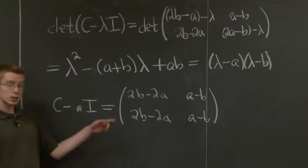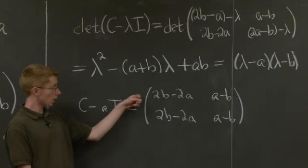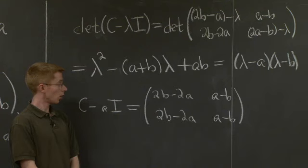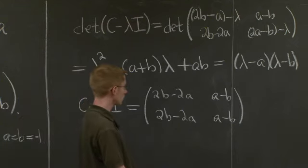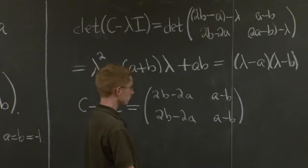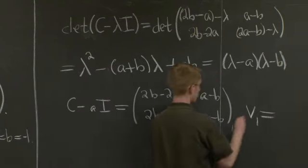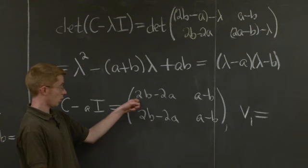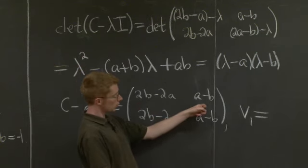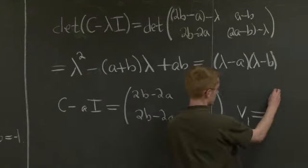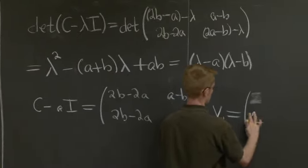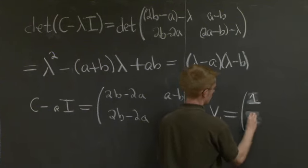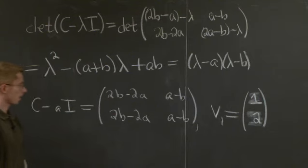Good. So you can see that this matrix has the same columns and the same rows. And so you can see that a vector in the null space, since this column is negative 2 times this column, we can see that our first eigenvector is just 1, 2.